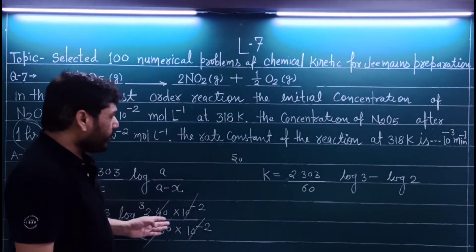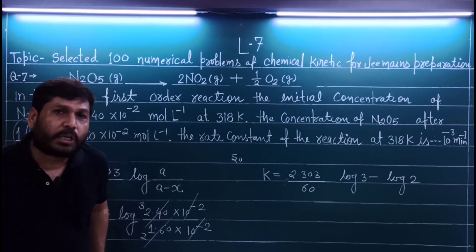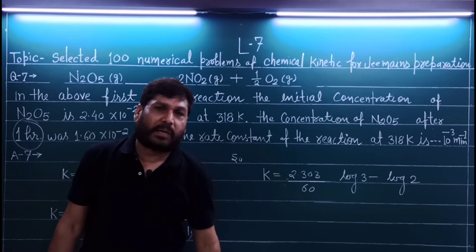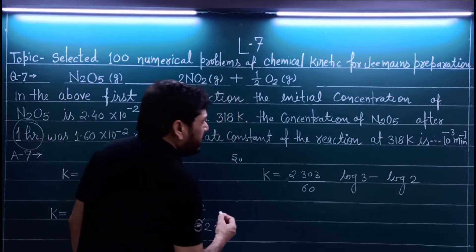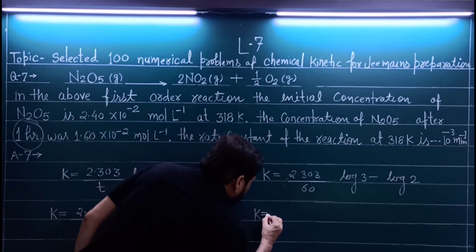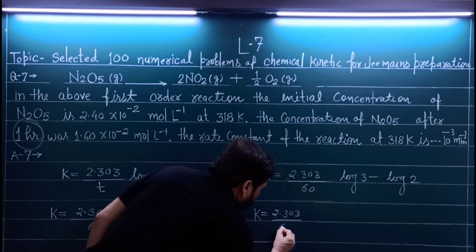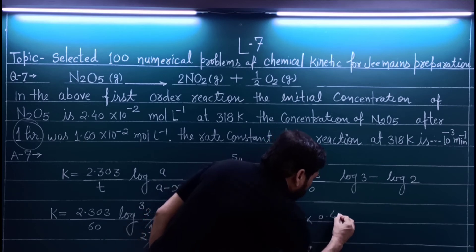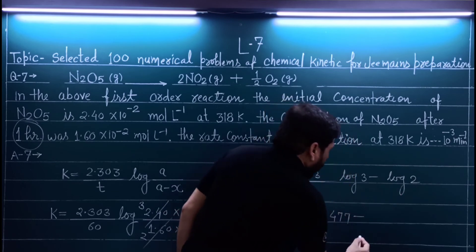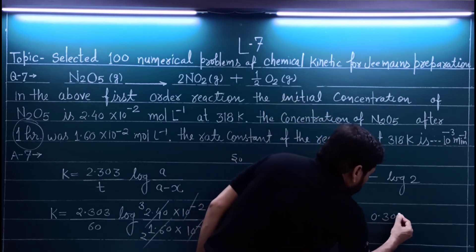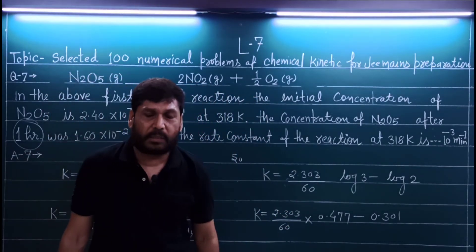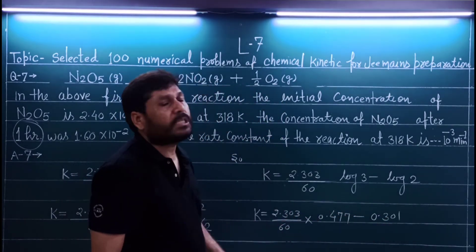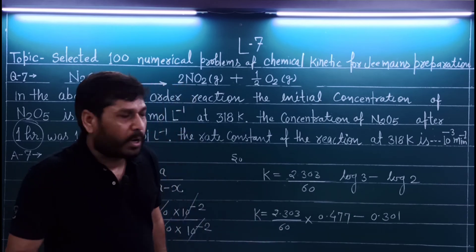This is the simple way to evaluate the log. We get log 3 minus log 2. The value of log 3 is 0.477, and the value of log 2 is 0.301. You should memorize log values up to at least log 5. Subtract these values, multiply by 2.303, and divide by 60 to get the final answer.